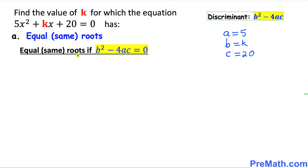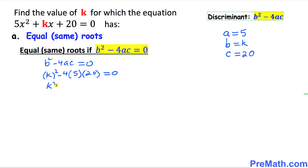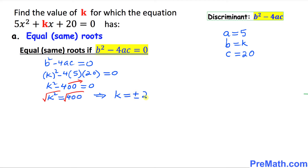Same or equal roots means the discriminant must be equal to 0. So b squared minus 4ac equals 0. Filling in the values: k squared minus 4 times 5 times 20 equals 0, which simplifies to k squared minus 400 equals 0. Moving 400 to the other side gives k squared equals 400.